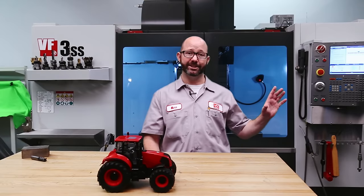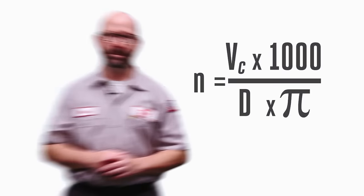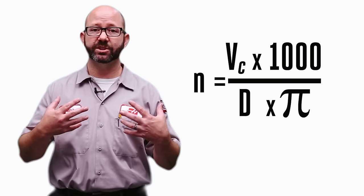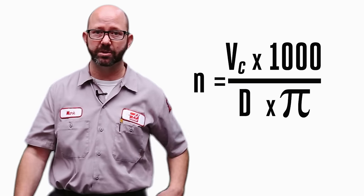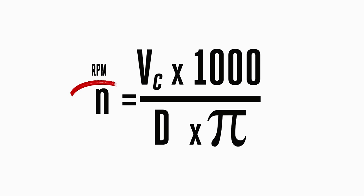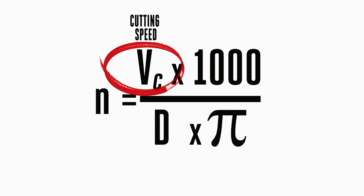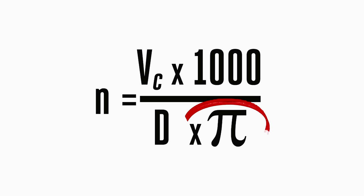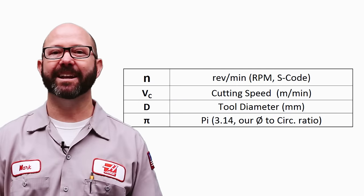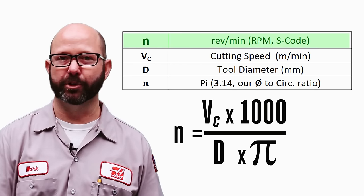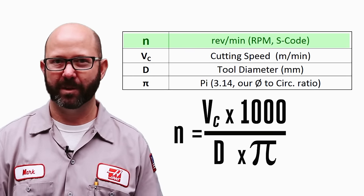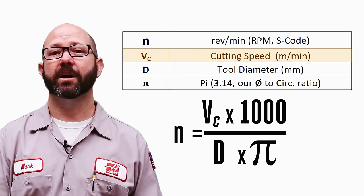Here is our formula to calculate our RPM. I'm going to start using some symbols — some notation — because those are the symbols being used by all of the tool suppliers now, and you'll need to recognize them. RPM equals cutting speed times 1000, all divided by our diameter times pi. N is our RPM, revolutions per minute — that's the S code in our program, what we're trying to solve for.